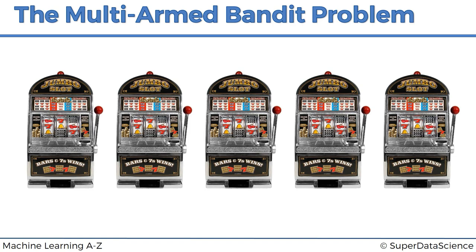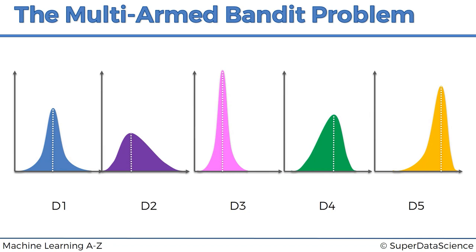You decide you're going to play a hundred or a thousand times and you want to maximize your return. How do you figure out which ones to play? To describe the problem in more detail, the assumption is that each one of these machines has a distribution behind it — a distribution of outcomes from which the machine picks results. Each machine has its own distribution. You pull the lever and it randomly picks an outcome from its distribution — whether you win or lose, and how much. But the problem is you don't know these distributions in advance, and they are assumed to be different for each machine.